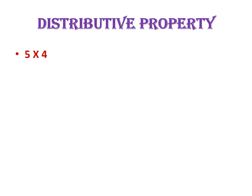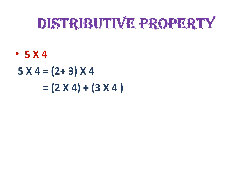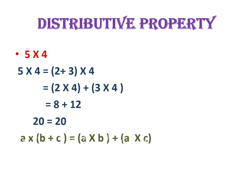Next one is distributive property. A number can be divided into two parts. Here, consider 5 into 4. The first number is 5, and we can divide it into two parts — we can write 5 as 3 plus 2. So we can write 5 into 4 as 3 into 4 plus 2 into 4. Then, 3 into 4 is equal to 12 and 2 into 4 is equal to 8, giving a total of 20, which equals 5 into 4. From this, we can say that a into (b plus c) is equal to a into b plus a into c. This is called the distributive property of whole numbers.